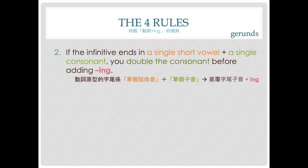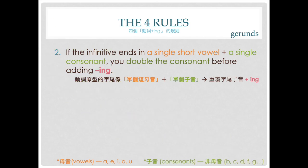Rule number two: if the infinitive ends in a single short vowel — vowels are a, e, i, o, u — and a single consonant, you double the consonant before adding -ing. Consonants are not a, e, i, o, u, so like b, c, d, f, or g. Let's look at the examples.